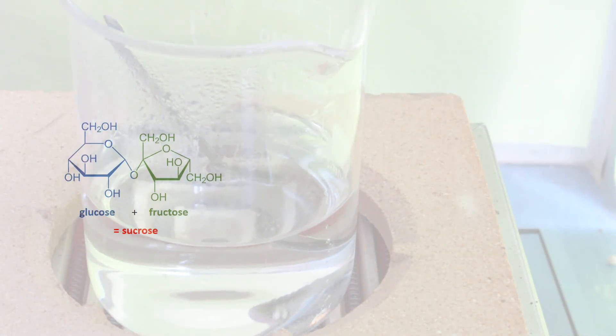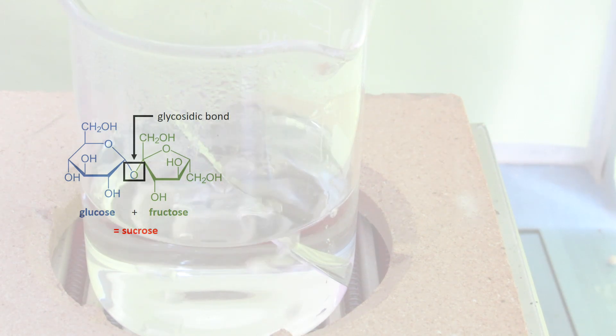Table sugar is actually pure sucrose which consists of two parts: the glucose on the left and fructose on the right. They are linked together by an ether bond called a glycosidic bond. While fructose and glucose are reducing sugars, the glycosidic bond actually makes sucrose not a reducing sugar. The citric acid we added acts as a catalyst for the hydrolysis of sucrose.